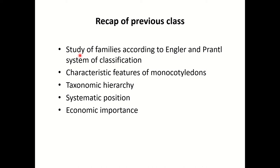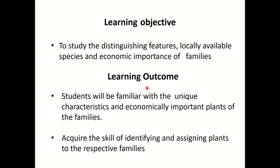We had studied about the families according to Engler and Prantl system of classification, the characteristic features of monocotyledons, taxonomic hierarchy, systematic position and economic importances. Now the learning objective is to study the distinguishing features, locally available species and their economic importances, with special emphasis on the economic importance of the families.